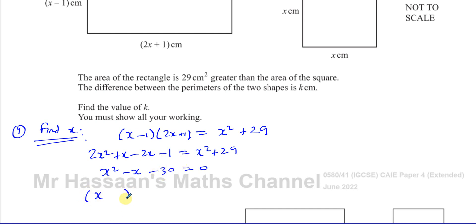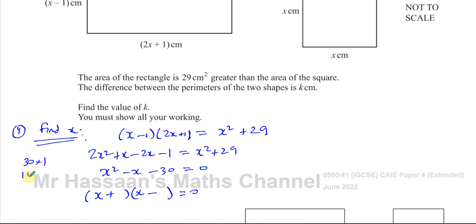Now this is something I can factorize. I have just 1X squared so I can put it straight into two brackets without splitting the middle term. X times X is X squared. Two numbers that multiply to give negative 30 and add to give plus 1 — the signs must be different. Thinking of factor pairs of 30: 30×1, 15×2, 10×3, 5×6.